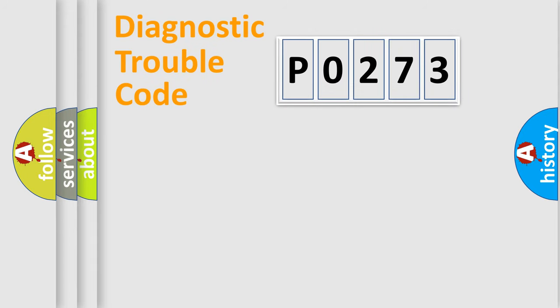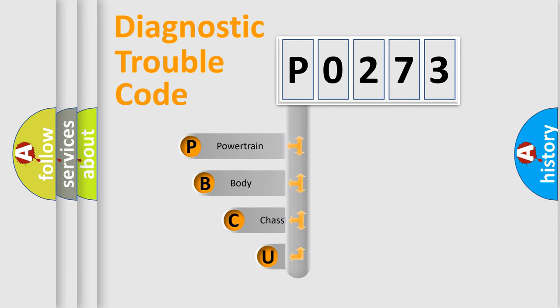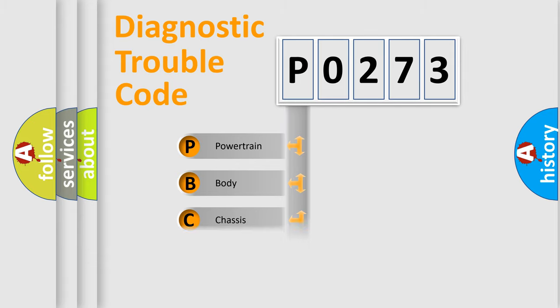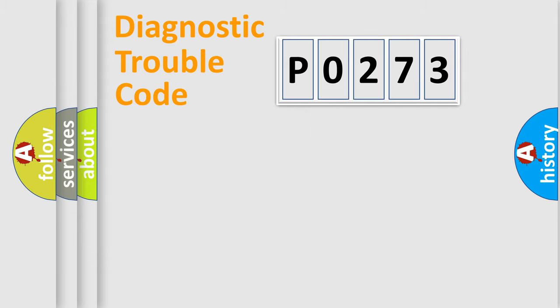Let's do this. First, let's look at the history of diagnostic fault code composition according to the OBD2 protocol, which is unified for all automakers since 2000. We divide the electric system of the automobile into four basic units: Powertrain, Body, Chassis, and Network.